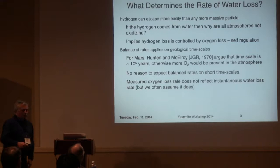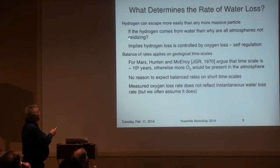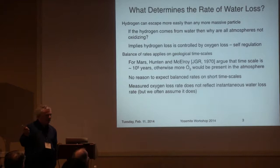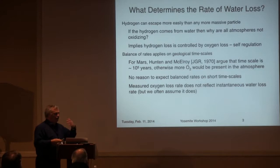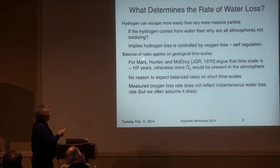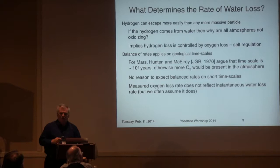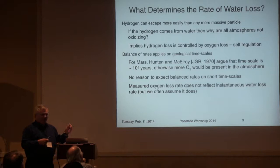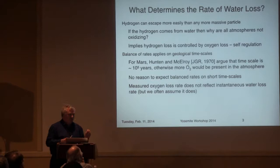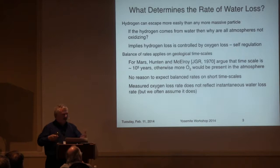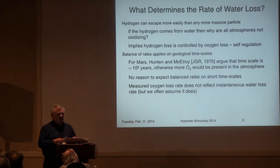So what determines the rate of water loss? Obviously hydrogen can escape very easily — it's the lowest mass atom and nothing holds neutral hydrogen back. So all the planetary atmospheres should be losing hydrogen, and all planets should have oxidizing atmospheres. They don't. The idea is that because oxygen can't escape so easily, it somehow acts as a choke on the loss of hydrogen. They call this self-regulation.